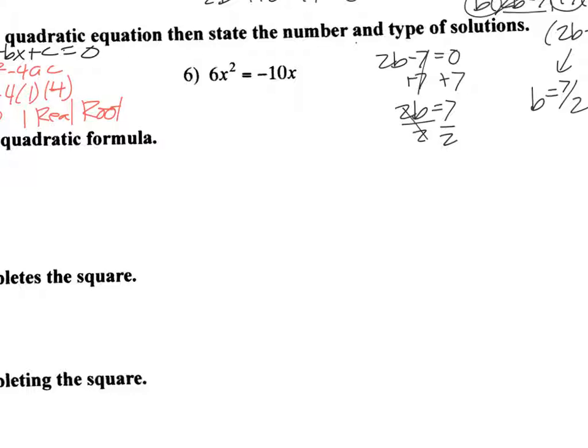So I come over here to number 6. Again, standard form. So in this case, I've got to move the 10x over. So that gives me 6x squared plus 10x plus what? What's my c? Well, there is no number here. So we put 0 in place of the c. Now you've got to do that because you've got to know the value. So here, a is 6, b is 10, and c is 0.